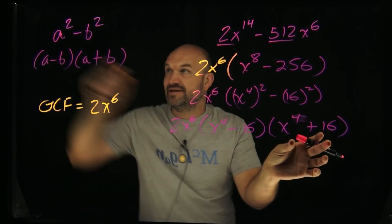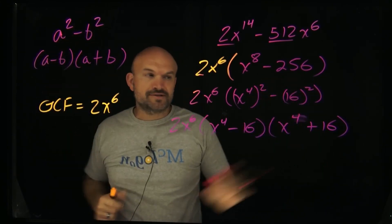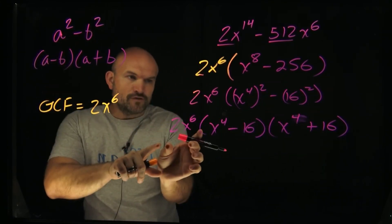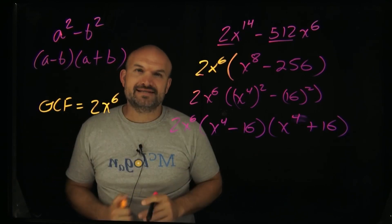Now, I can't do anything with this, because that's not the sum of two squares. It's only the difference of two squares. So I'm going to go ahead and rewrite this over here. And then now I'm just going to rewrite this as a difference of two squares.